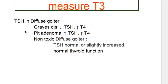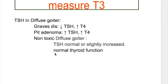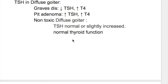Regarding TSH in diffuse goiter: diffuse goiter occurs in Graves disease, pituitary adenoma producing TSH, and non-toxic diffuse goiter due to iodine deficiency. In Graves disease there is decreased TSH and increased T4. In pituitary adenoma, there is increased TSH and increased thyroxine. In non-toxic diffuse goiter, TSH is normal and thyroid functions are normal.